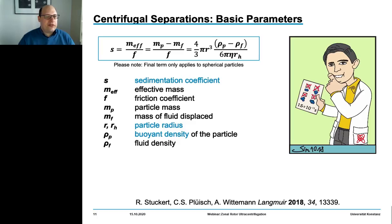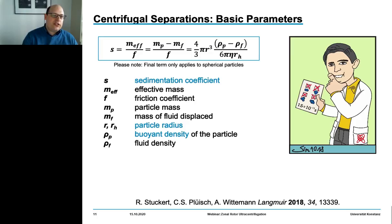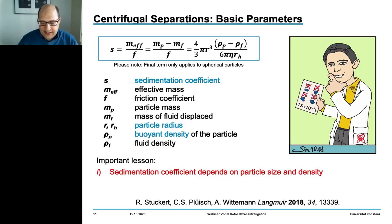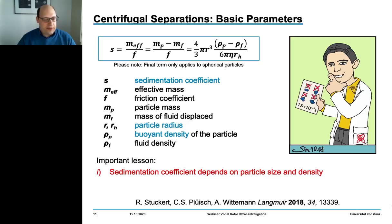The effective mass of the particles is the difference between the actual mass of the particle and the mass of the fluid displaced by the particle. For spherical particles, we can express the sedimentation coefficient as a function of two important parameters: the particle radius (or hydrodynamic effective radius) and the buoyant density of the particle.